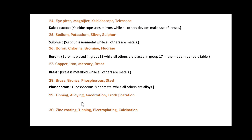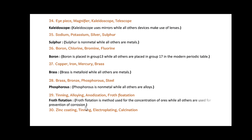Next: Tinning, Alloying, Anodization and Froth Flotation. In this, Froth Flotation is the odd one out. Since Froth Flotation is a method used for the concentration of ores, while all others — Tinning, Alloying and Anodization — are used for the prevention of corrosion.